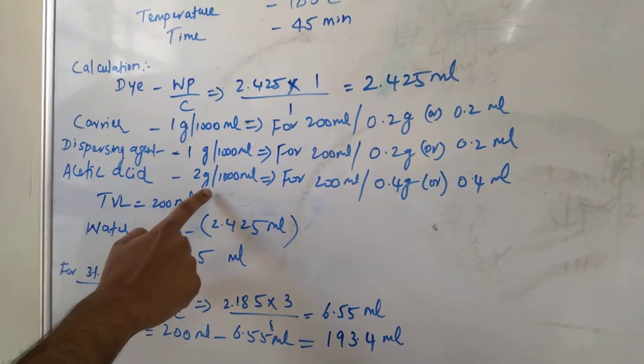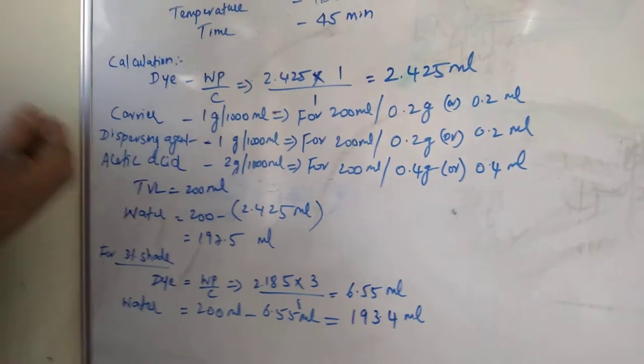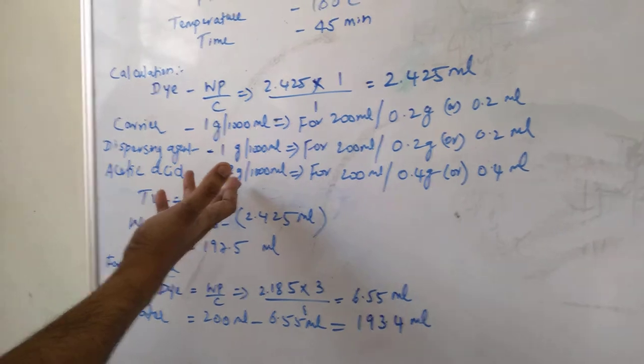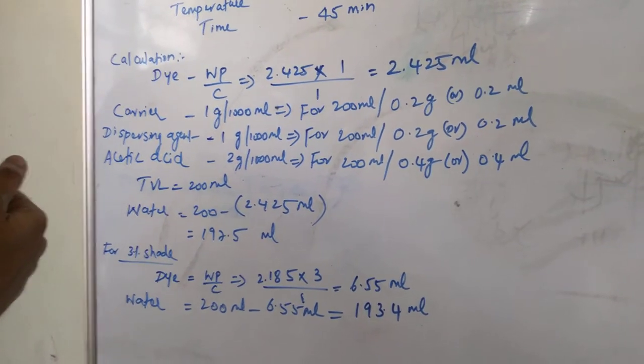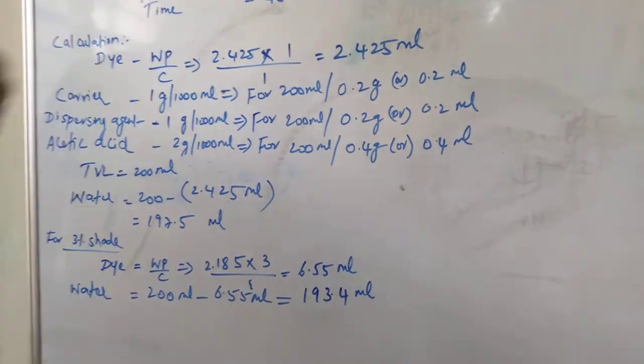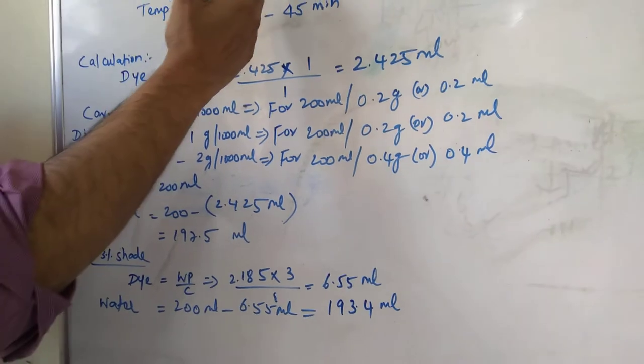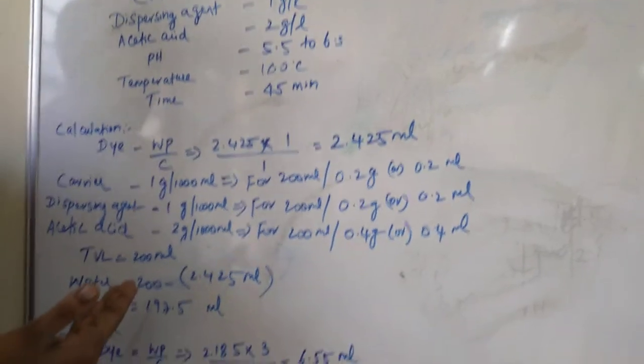Acetic acid for pH correction. Polyester fabric is comfortable with acid but not with alkali. Alkali will degrade. So that is why the pH of the dyeing should be performed preferably from 5.5 to 6.5.